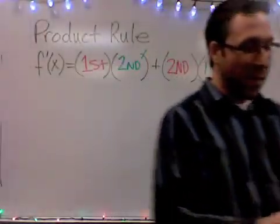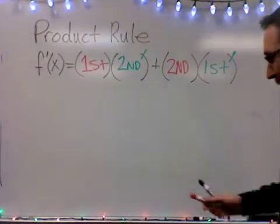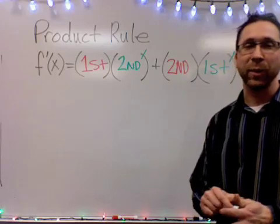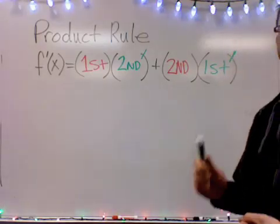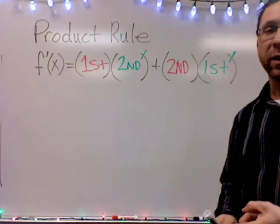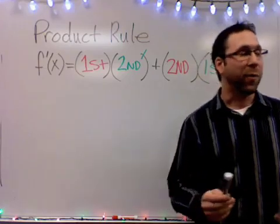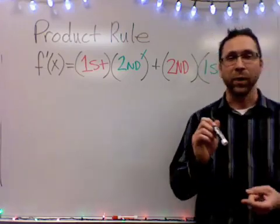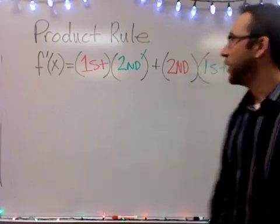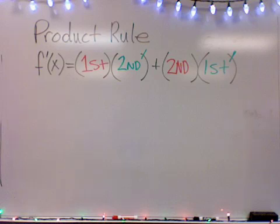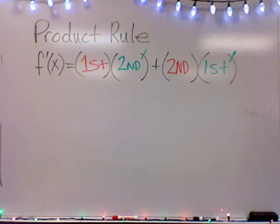Hello. You're back on YouTube here watching me do some examples with calculus, and I want to run through a trilogy of math for you using the product rule, the quotient rule, and the chain rule. So basically this is your product rule and it basically involves filling in four blanks.